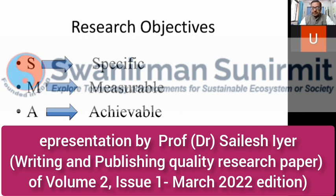You should not have research objectives which cannot be measured. Then comes Achievable — something that you think you can actually achieve. If you put an unachievable goal in scientific research, you will always be in a loop, unable to complete your work even in six years. Slowly you will lose interest in the topic and leave your work. We want time-bound research but proper research to happen.